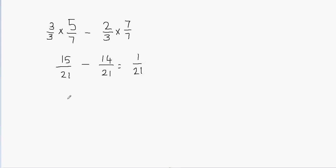So 5/7 minus 2/3 equals 1 over 21 — that's the final answer. That's all for this video. Thank you so much for watching. Please like, comment, and subscribe to my channel. I'll see you in the next video.